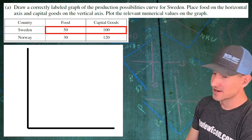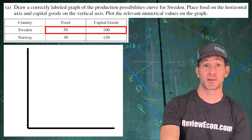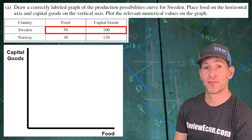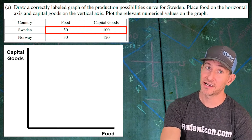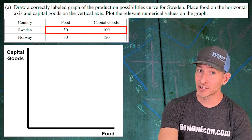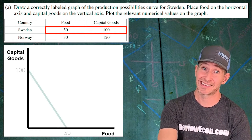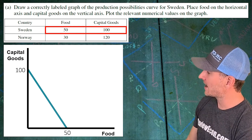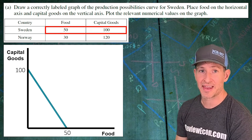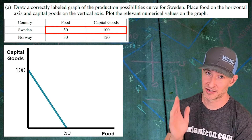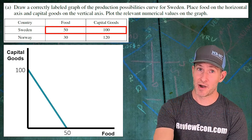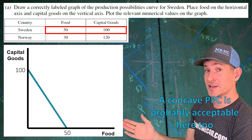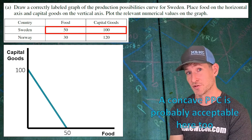We've got our axes here. As the question indicates we should, we are going to place the food on the horizontal axis and capital goods up there on the Y axis. I'm going to draw here a linear production possibilities curve that indicates constant opportunity costs, with 100 there on the Y axis and 50 there on the X axis. Make sure you put the numbers there just as the question indicates. A concave or bowed out curve would also be perfectly acceptable.